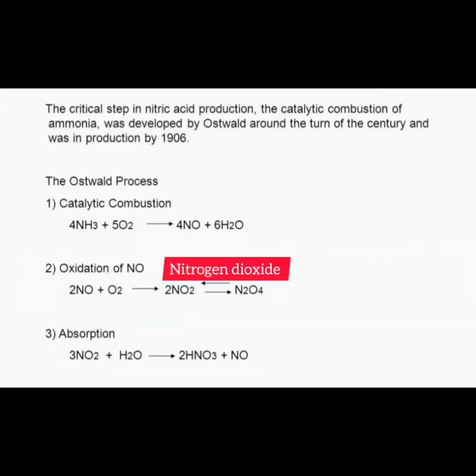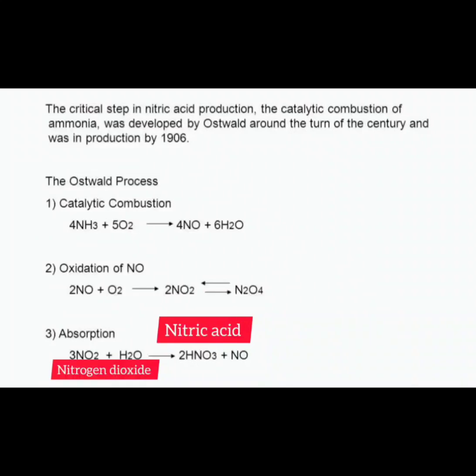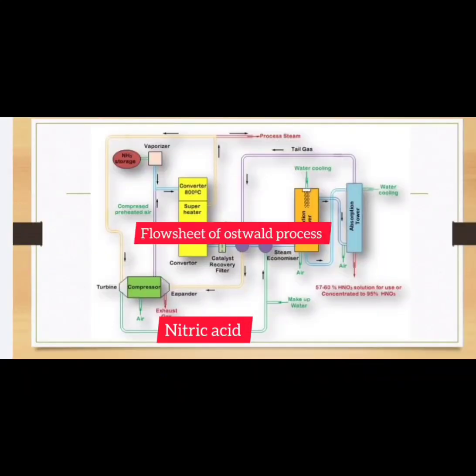Nitrogen monoxide reacts with oxygen to form nitrogen dioxide, and nitrogen tetroxide also forms nitrogen dioxide. This is the flow sheet of the Ostwald process.